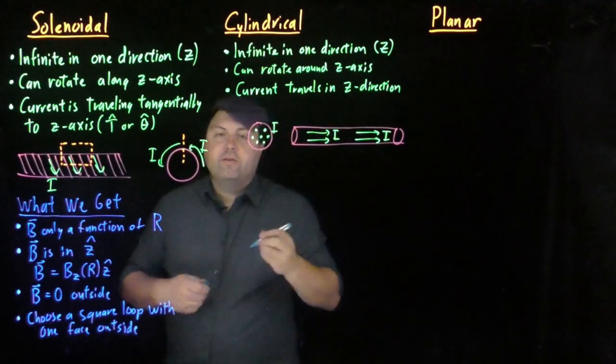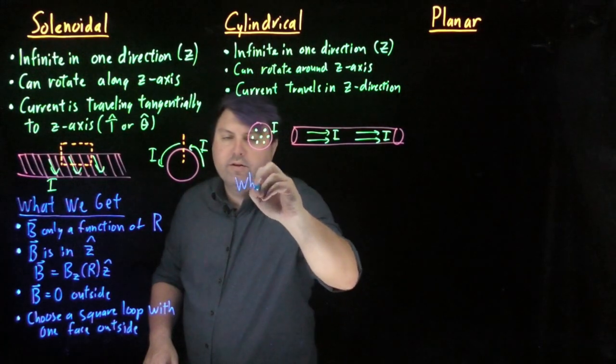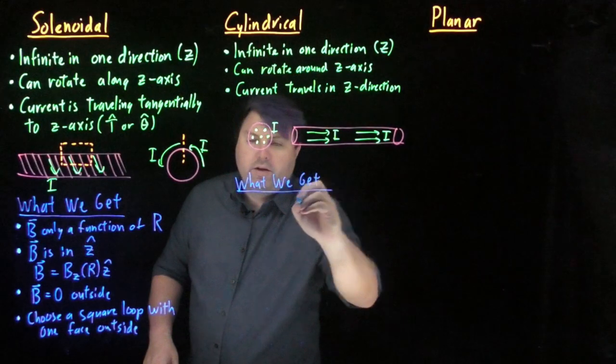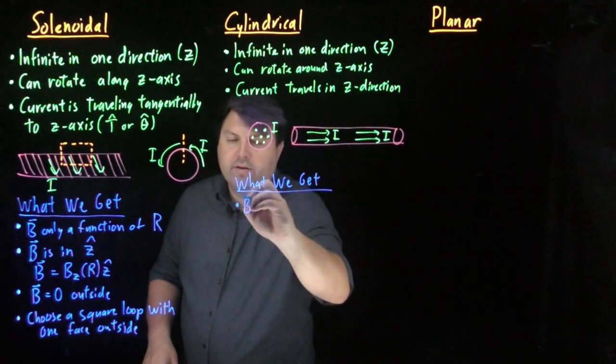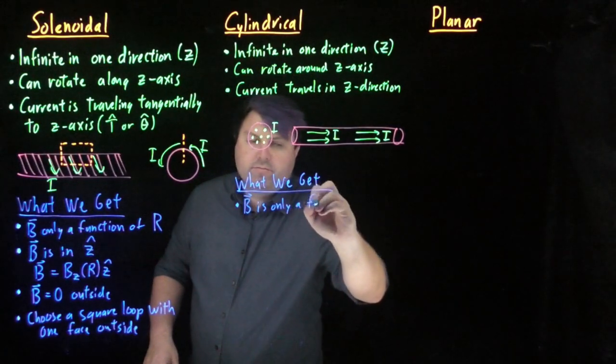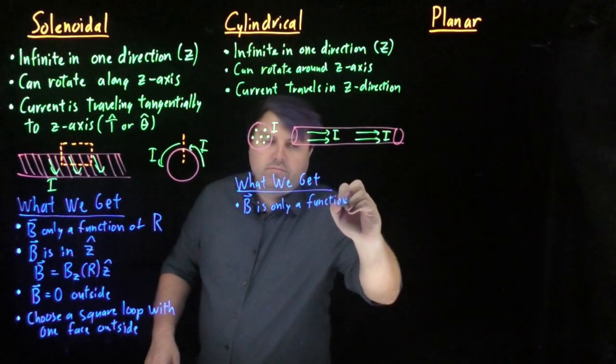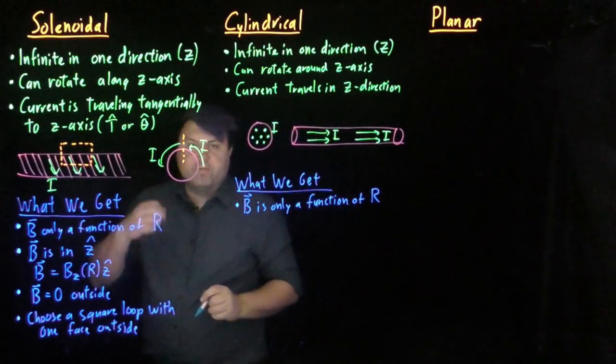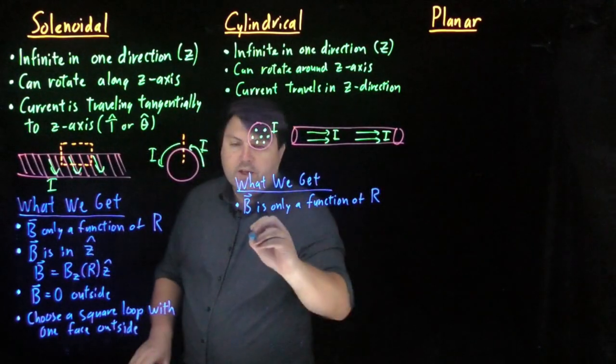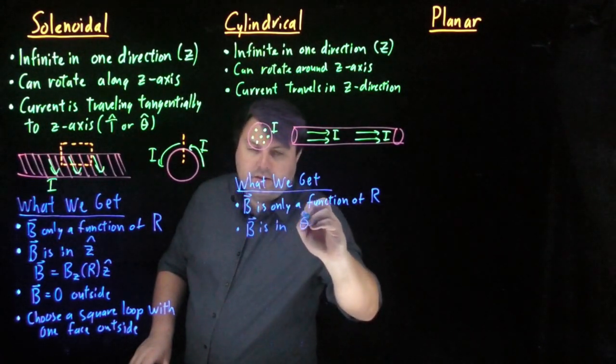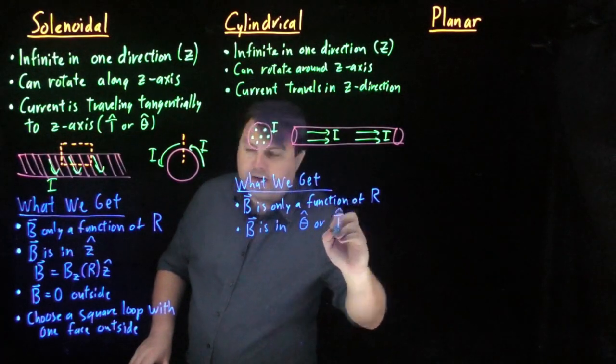So what we get for our cylindrical symmetry is that our magnetic field is only a function of r. Very similar to solenoidal, very similar to the electric fields for cylindrical, but now our magnetic field is in the theta hat or the tangential hat.